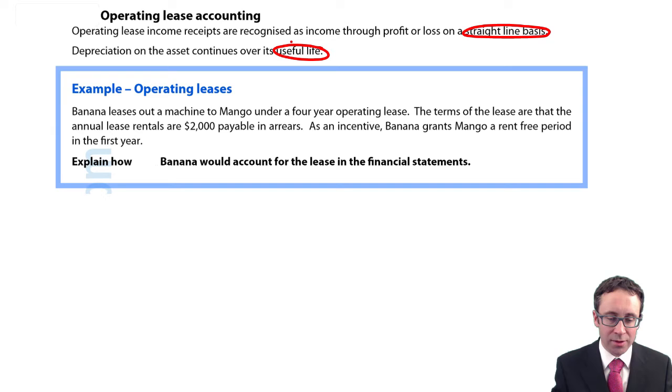The question says explain how Banana would account for the lease in the financial statements. Banana leases out a machine to Mango under a four-year operating lease. It specifically says it is an operating lease in the question. In a longer narrative style question you might have to identify with additional information that it is an operating lease. Here I'm just concerned with the accounting treatment.